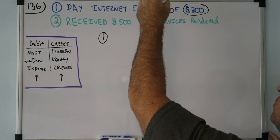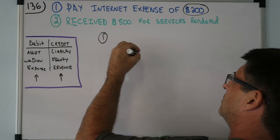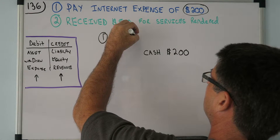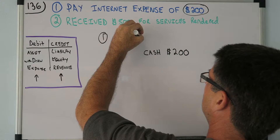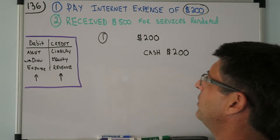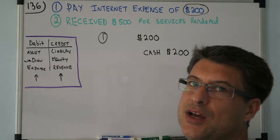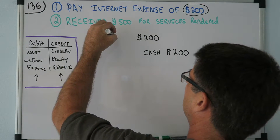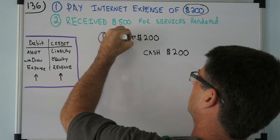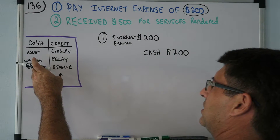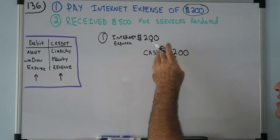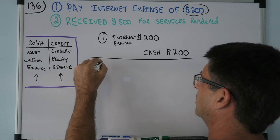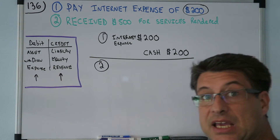Journal Entry 1: cash is leaving the business, so that's our credit — Cash $200. Debits and credits have to equal each other, so we put $200 on the debit side for Internet Expense. An expense is increasing per DC ADE/LER, so we debit the expense. Cash is leaving, so it's credited.